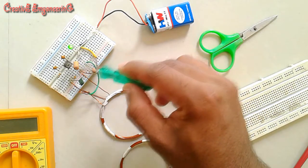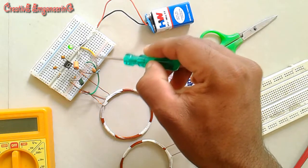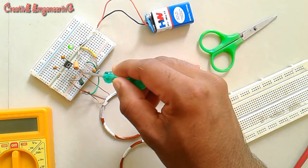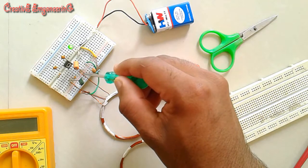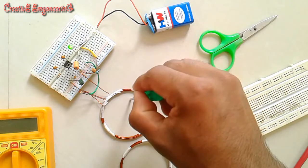This transistor works as an oscillator. These peripheral components are used for the working of the oscillator. So here it generates a high frequency AC supply. This high frequency is given to this transmitter coil.